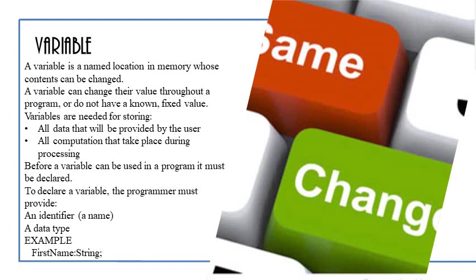Now, variables, on the other hand, is another location in memory whose contents will, of course, change. A variable can change value throughout a program, or do not have a known fixed value. Variables are needed for storing, for example, all data that will be provided by the user, a computation that takes place during the process. That means an answer that you're going to get after solving a problem. Before a variable can be used in a program, it must be declared similarly, like a constant.